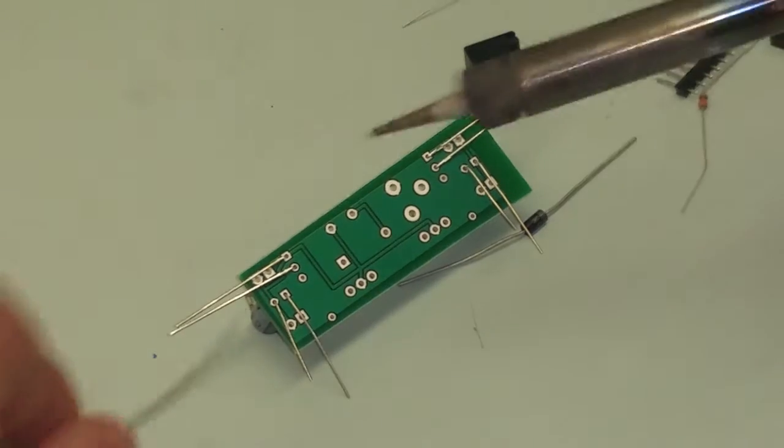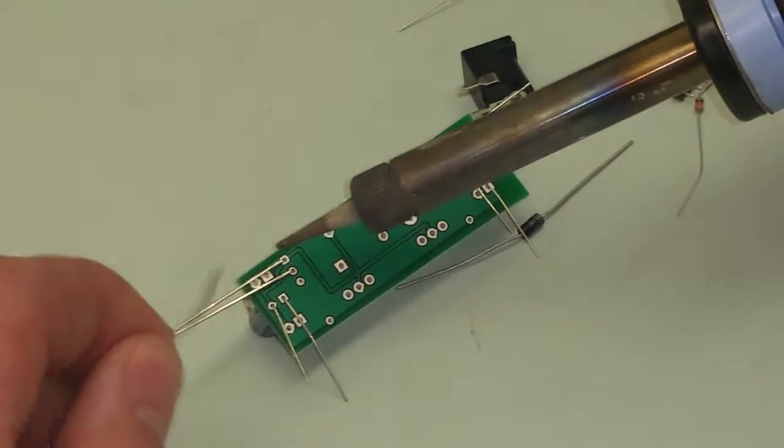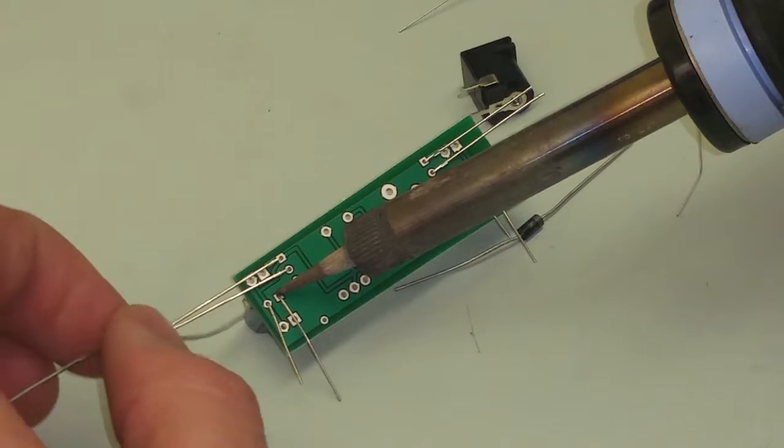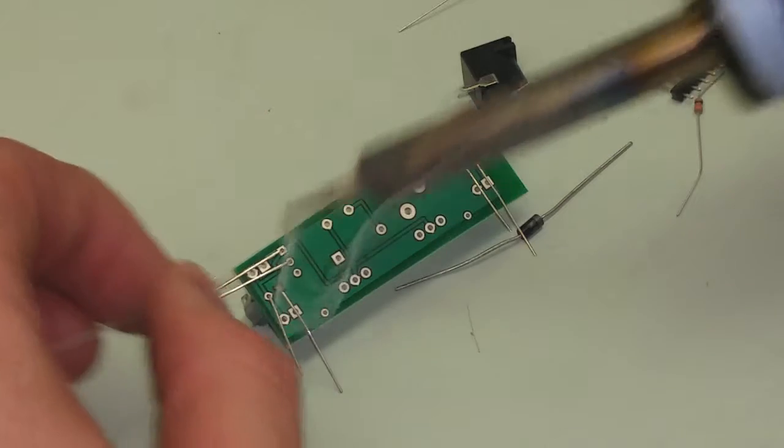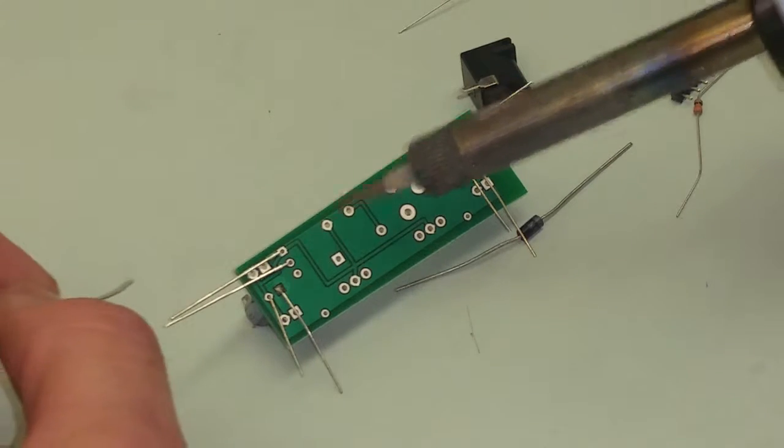The biggest trick that I think there is to soldering is you have to heat up what you are soldering. In other words, I don't want to heat up the solder. I want to heat up what it is, and then as I hit it, the solder is just going to flow right under there.